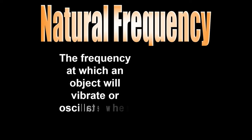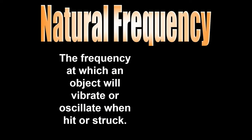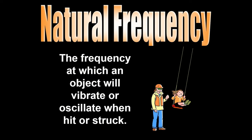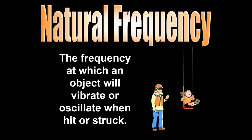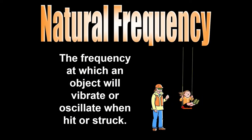Natural frequency is the frequency at which an object will vibrate or oscillate when hit or struck. If you just give a kid on a swing a little bit of a push, step back, and watch what happens — they're going to oscillate back and forth at some frequency. The frequency that they do naturally is called the natural frequency.